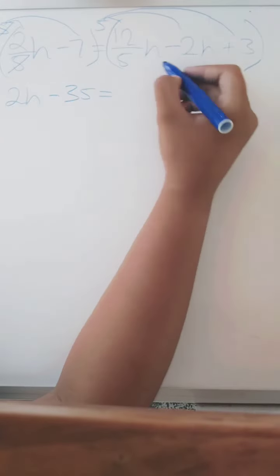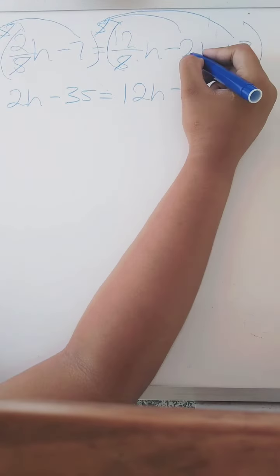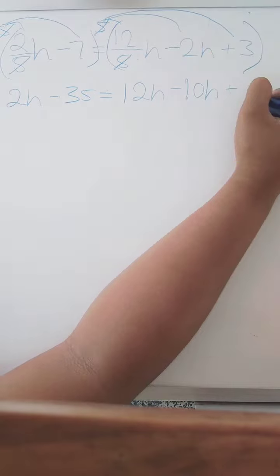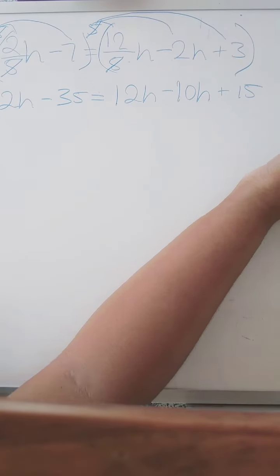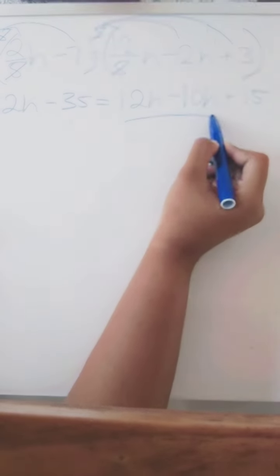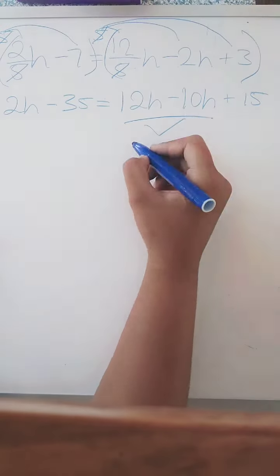Equal. On the other side, cancel out 5, we're left with 12H minus 10H, then positive 15. Okay, so our next step, we have to look for like terms, which is 12H minus 10H, and that equals 2H.